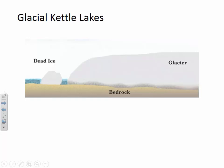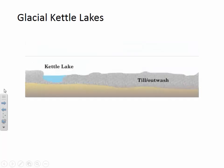Once separated from the main glacier, these large blocks of ice sit on the outwash plain, become buried in sediment, and eventually melt, leaving a depression in the outwash plain. As long as the bottom of the depression is below the regional water table, it fills with water and becomes what is known as a kettle lake. Edinburgh Lake is an example of such a feature.